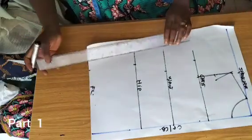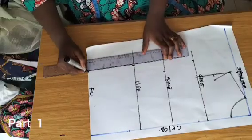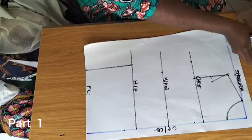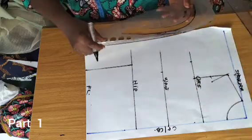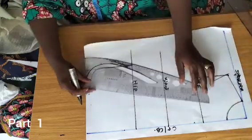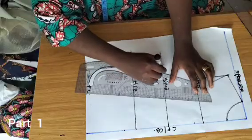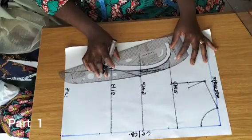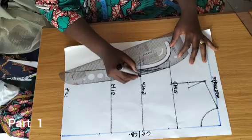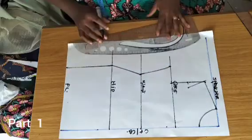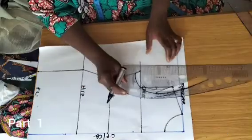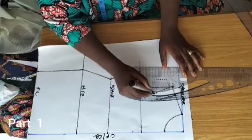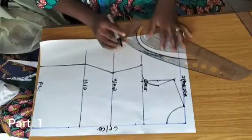Here on the floor level, I'll connect a straight line. Here on the waist, I will come in with my curve ruler and connect from hip to waist. Here on the chest line, I'll connect what I have to the chest line — so you can see what we have here. Then finally, I'm going to connect my arm hole as you can see.